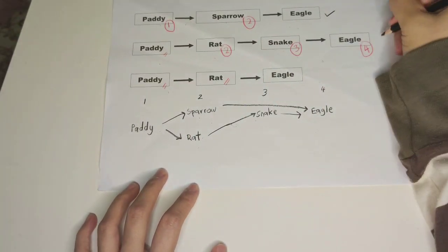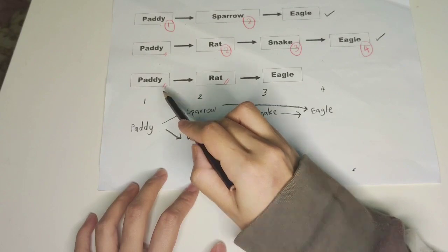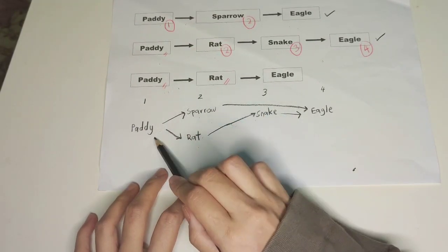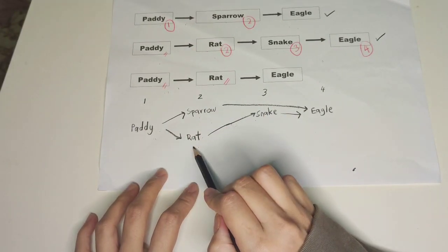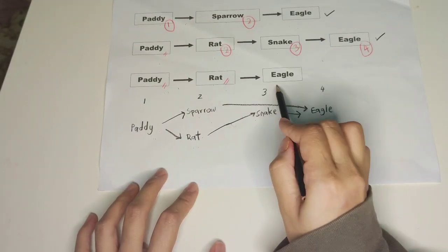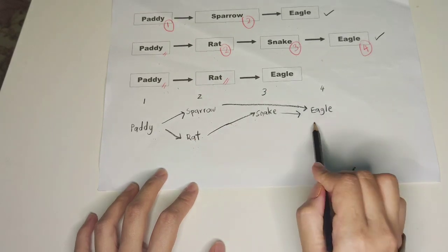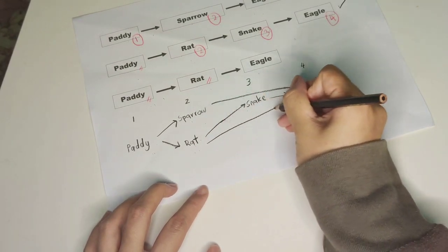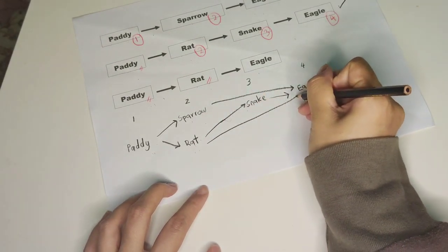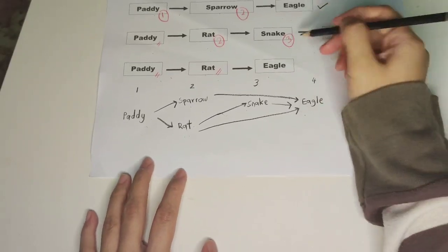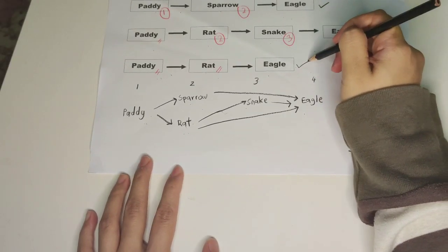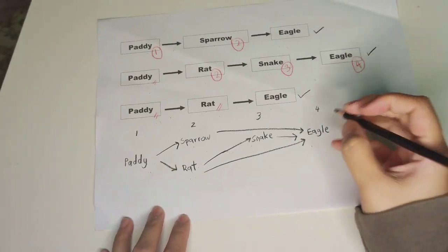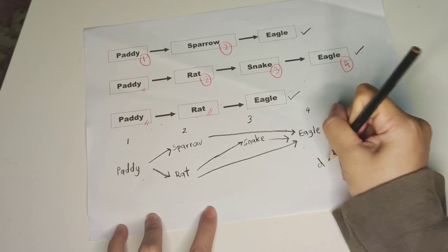Don't forget the third one. Paddy eaten by rat, and then rat eaten by eagle. We draw a long arrow to the eagle. Done!